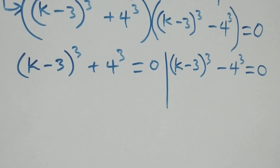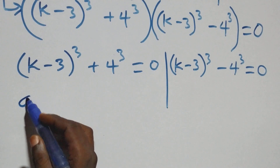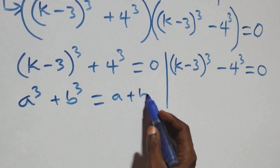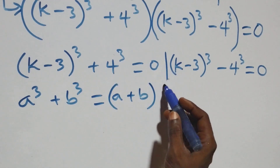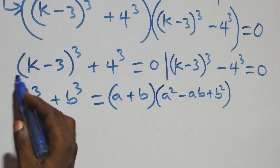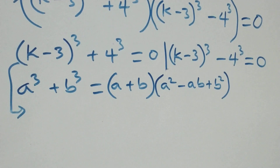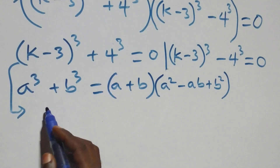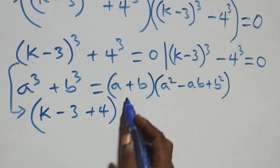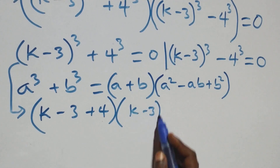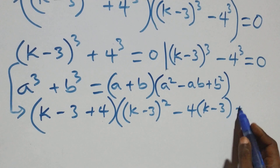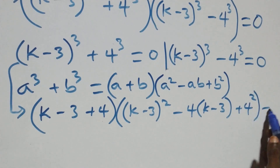Solving from the first case: this follows from a³ + b³ = (a + b)(a² - ab + b²). Taking (k minus 3) as a and 4 as b, we have (k minus 3 + 4) times [(k-3)² - 4(k-3) + 4²] equals zero.